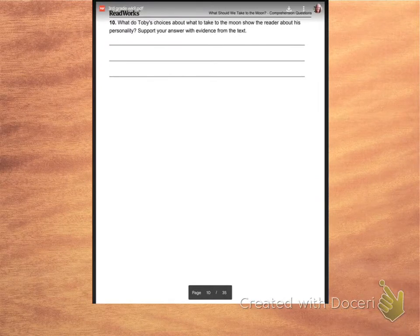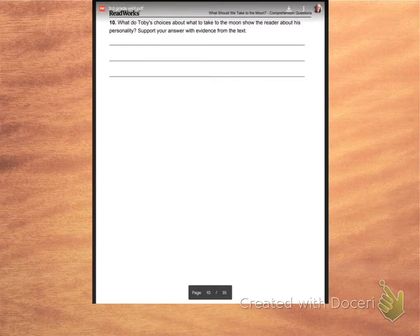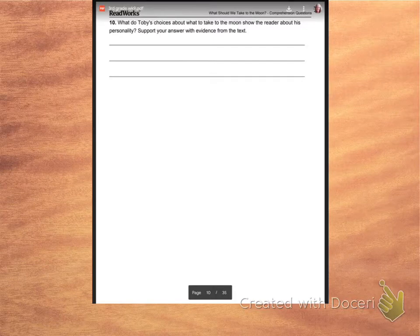Don't forget when you see something like this you want to use full sentences, which means a capital in the beginning and an end mark. So it says, and this one looks like there's only three lines, you could always use underneath also. It says what do Toby's choices about what to take to the moon show the reader, which is you, about his personality. So you might start with I think Toby is this kind of kid, whatever kind you think, and then say why you feel that way. Support it with evidence from the text.